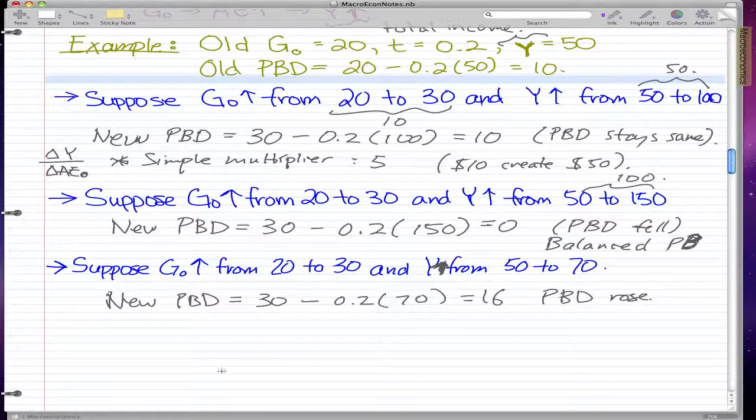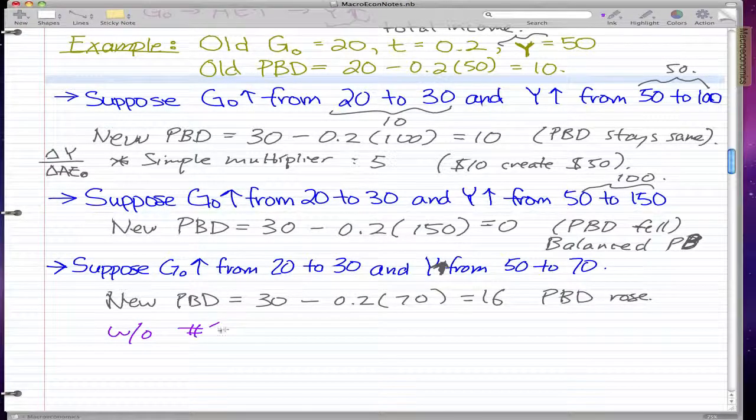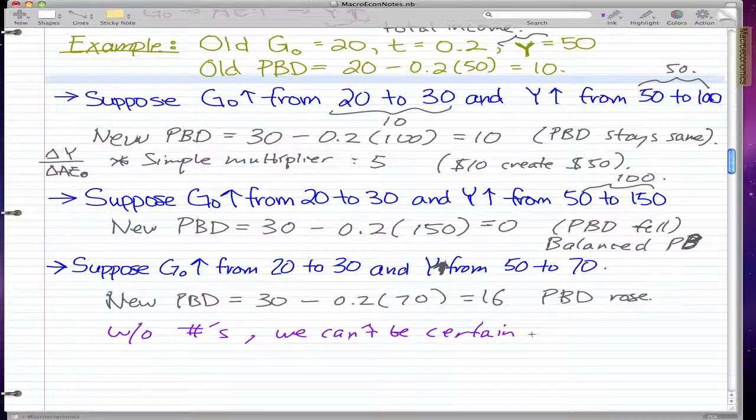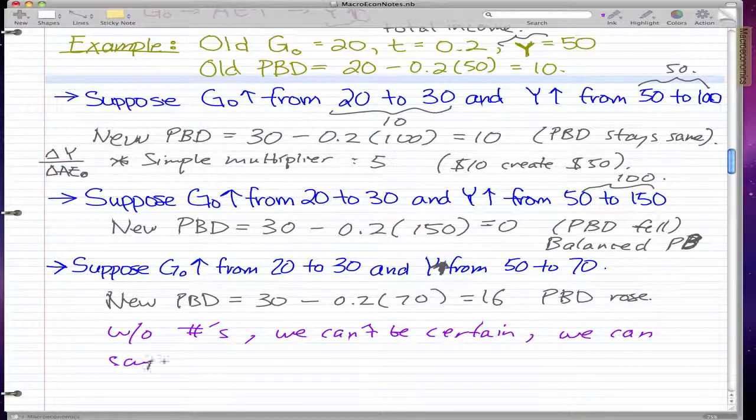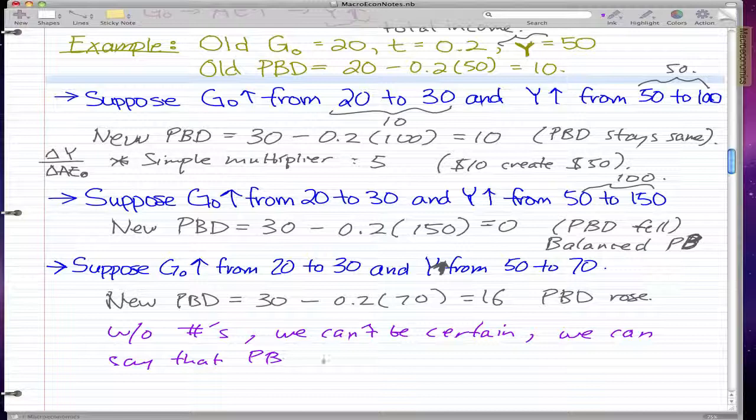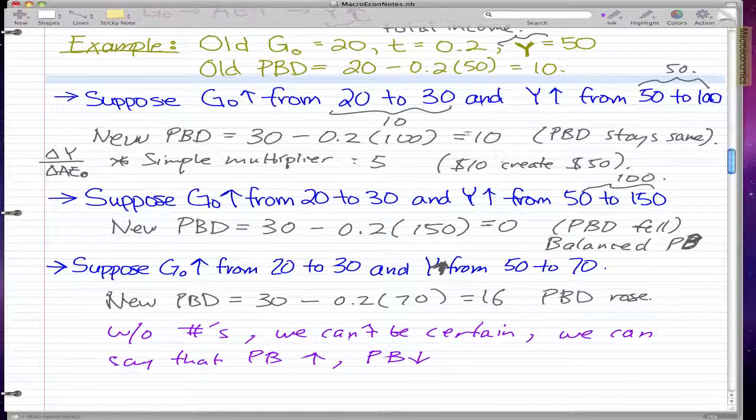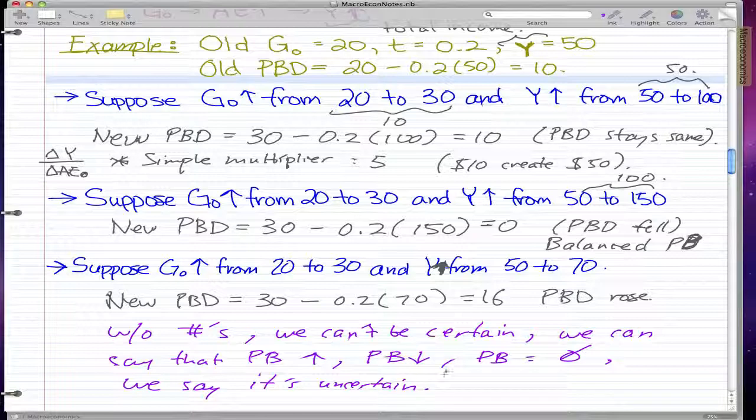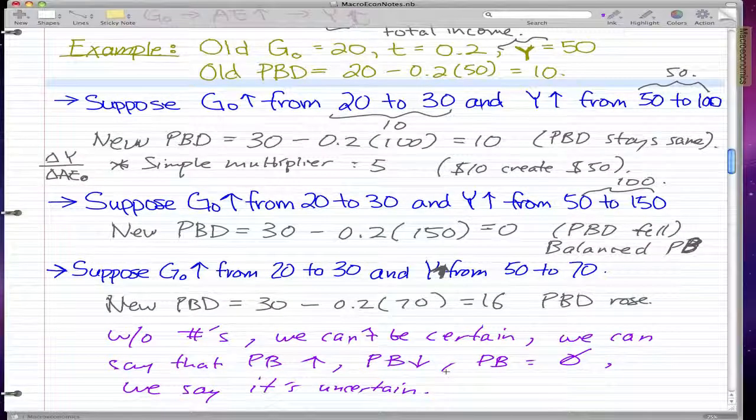The moral of the story is that without numbers, we can't be certain. We can say that the primary budget increased as in the last case, the primary budget decreased as in the second case, or the primary budget stayed the same as in the first case. We say it's uncertain. I'm sure that you understand what we did in today's video.